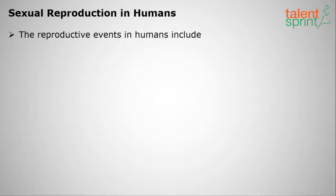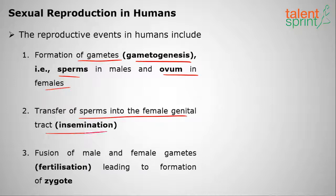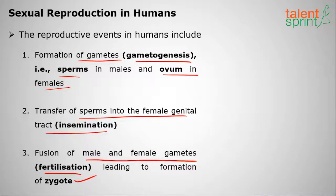Now we shall look at sexual reproduction in humans. The reproduction events in humans include these stages: first, the formation of gametes (gametogenesis) — sperms in males and ovum in females; second, the transfer of sperms into the female genital tract, called insemination; third, the fusion of male and female gametes called fertilization, which forms the zygote.